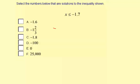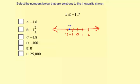Let me show you visually what this inequality is trying to say. So this is a simple number line: 0, negative 1, negative 2, 1, and 2. This inequality is saying at negative 1.7, which is about right here, if you go less than or equal to that value, you're going to have a solution. All the numbers on the number line going to the left are solutions, because it's asking for numbers less than or equal to negative 1.7.